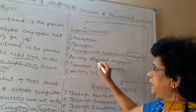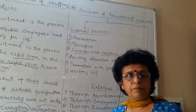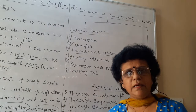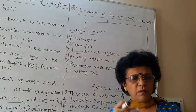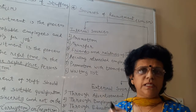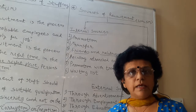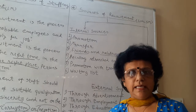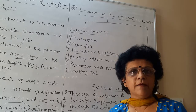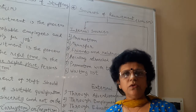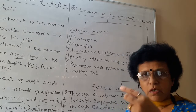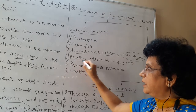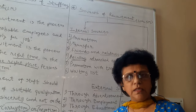The next internal source is recalling retrenched employees. Sometimes we have compulsorily given VRS — voluntary or compulsory retirement. If a need arises, you know those employees are already trained, they know the organization well, and are capable of meeting its needs. You have the list already with you, so you can recall the best one or two you are looking for and allow them to rejoin the organization.